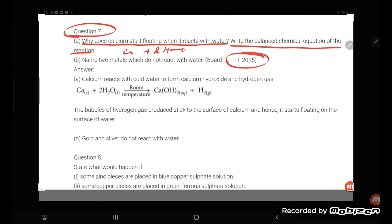So if you're talking about calcium reacting with the water molecule, 2H₂O, it is forming calcium hydroxide Ca(OH)₂ plus it is releasing hydrogen gas. Calcium reacts with cold water to form calcium hydroxide and hydrogen gas.